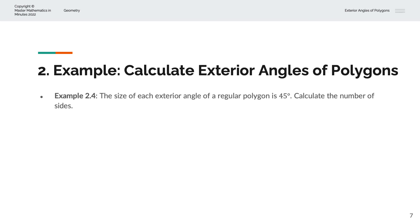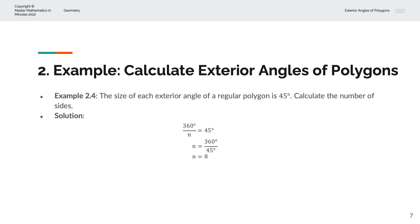In the fourth example, we're given that the size of each exterior angle of a regular polygon is 45 degrees, and we're asked to calculate the number of sides. We know that each exterior angle equals 360 degrees divided by n. Setting this equal to 45 degrees and solving for n, we get n equals 360 divided by 45, which simplifies to n equals 8. So this polygon has 8 sides.